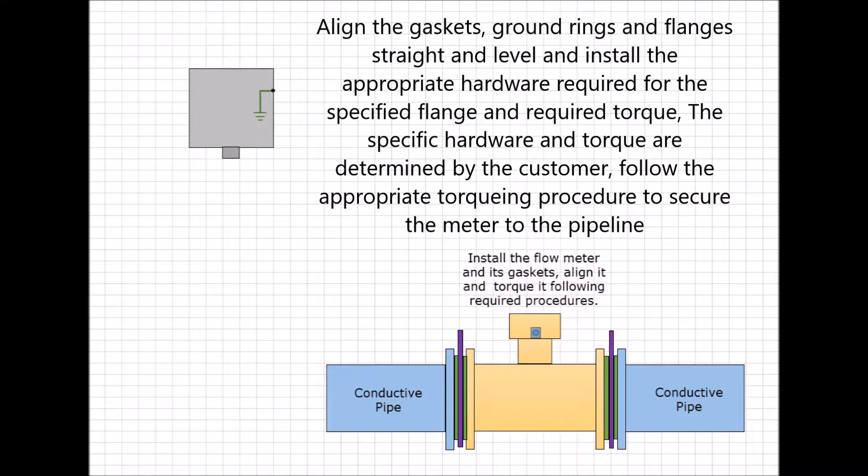Align the gaskets, ground rings and flanges straight and level and install the appropriate hardware required for the specified flange and required torque. The specific hardware and torque are determined by the customer. Follow the appropriate torquing procedure to secure the meter to the pipeline.